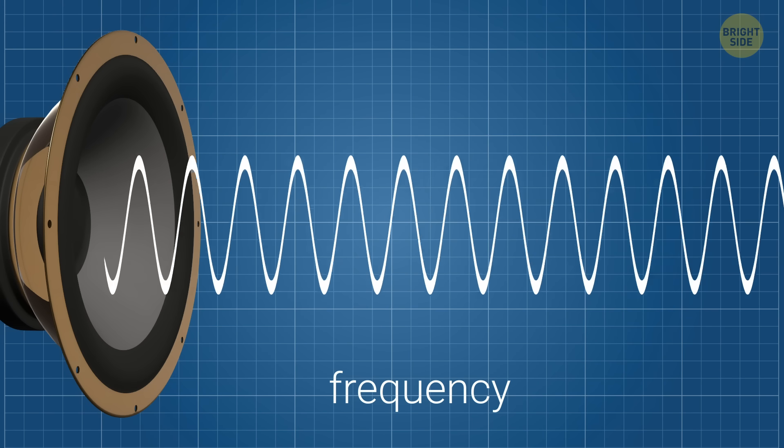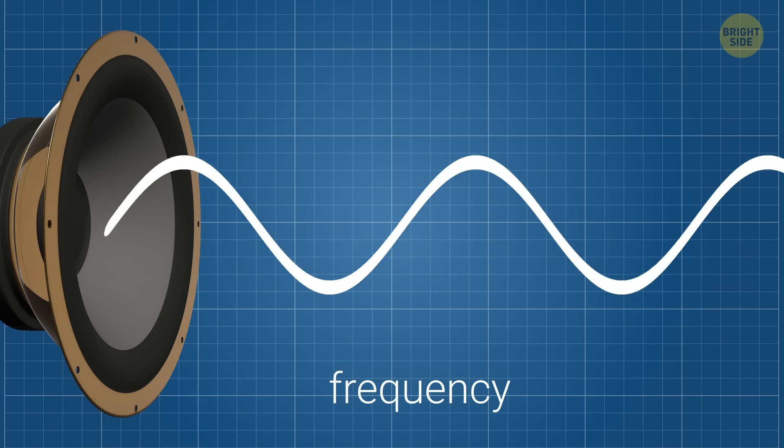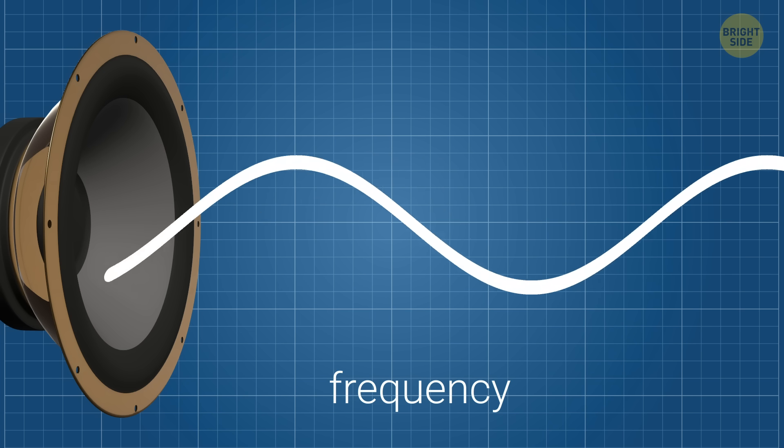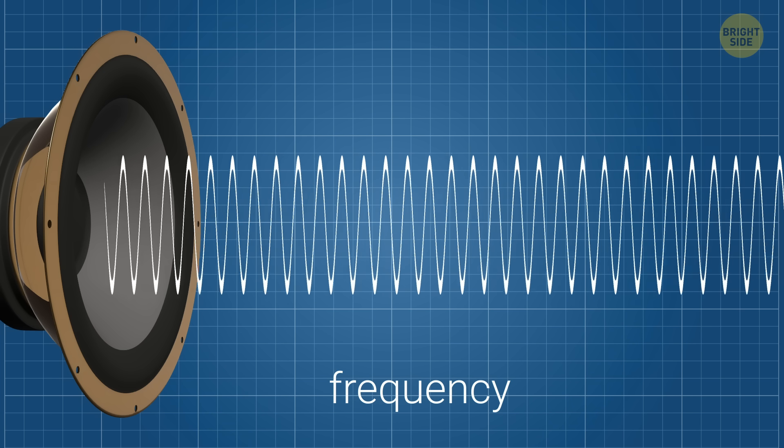The speed of these waves is called frequency. If this frequency is low, we hear a deep sound, like a bass drum. When the frequency is high, it produces a sharp sound like a whistle.